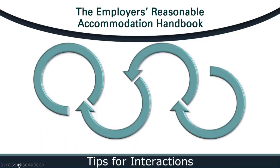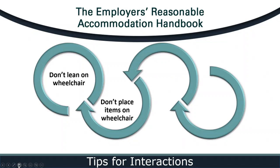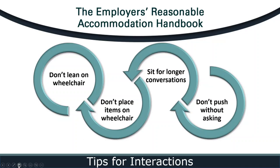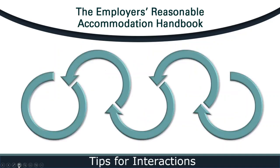Dustin, we just discussed being courteous. Additional ways we can demonstrate this is by thinking of a wheelchair or mobility device as an extension of a person's body or their personal space. Just as you would not lean on a coworker, don't lean on a person's wheelchair. Don't place items on the wheelchair when it isn't being used. If you are having a longer conversation with a colleague who is using a wheelchair, either step back or sit down so both parties can have this discussion at a respectful eye level. Do not push someone who is using a wheelchair without asking first. Individuals use the wheelchair to move about the environment independently, and you want to be respectful of that. Similarly, do not grab someone who uses a cane or crutches, and don't move these devices without asking.